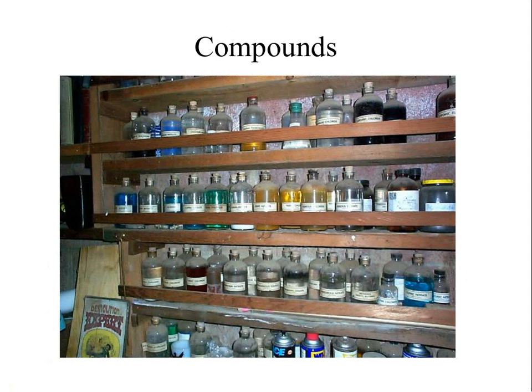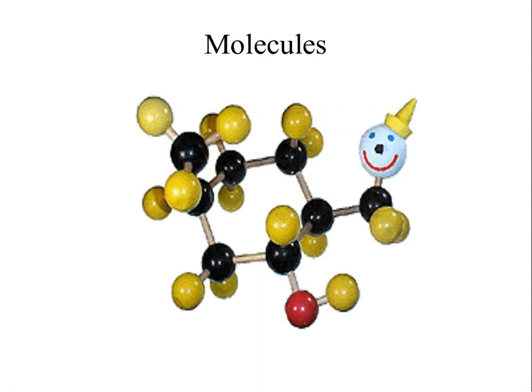Compounds are made up of multiple elements put together. A compound is a combination of any of those 90 elements. And there can be one or more elements put together to create something more complicated. Here's an example of a model of a molecule, we call it. The smallest piece of a compound is a molecule. And this molecule might have, let's say, sulfur and carbon and iron in it. Maybe the yellow ones are sulfur and the black are carbon and the red is iron. And I don't know what that white one there is. But that is a molecule like a chemist might build out of little sticks and balls.